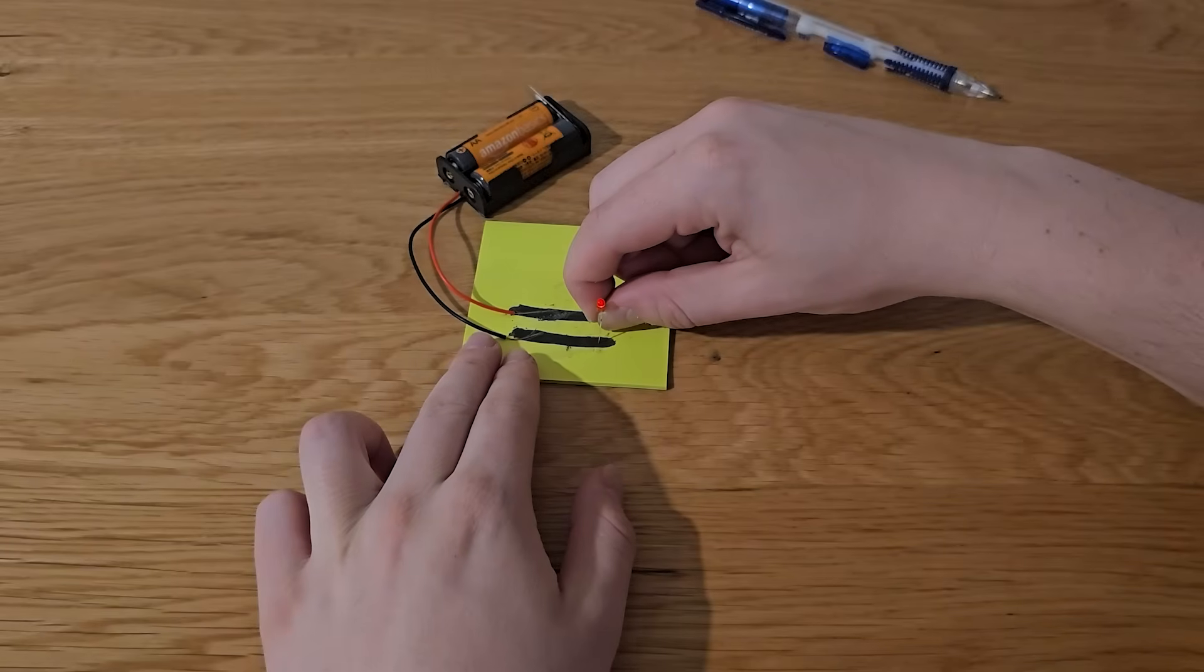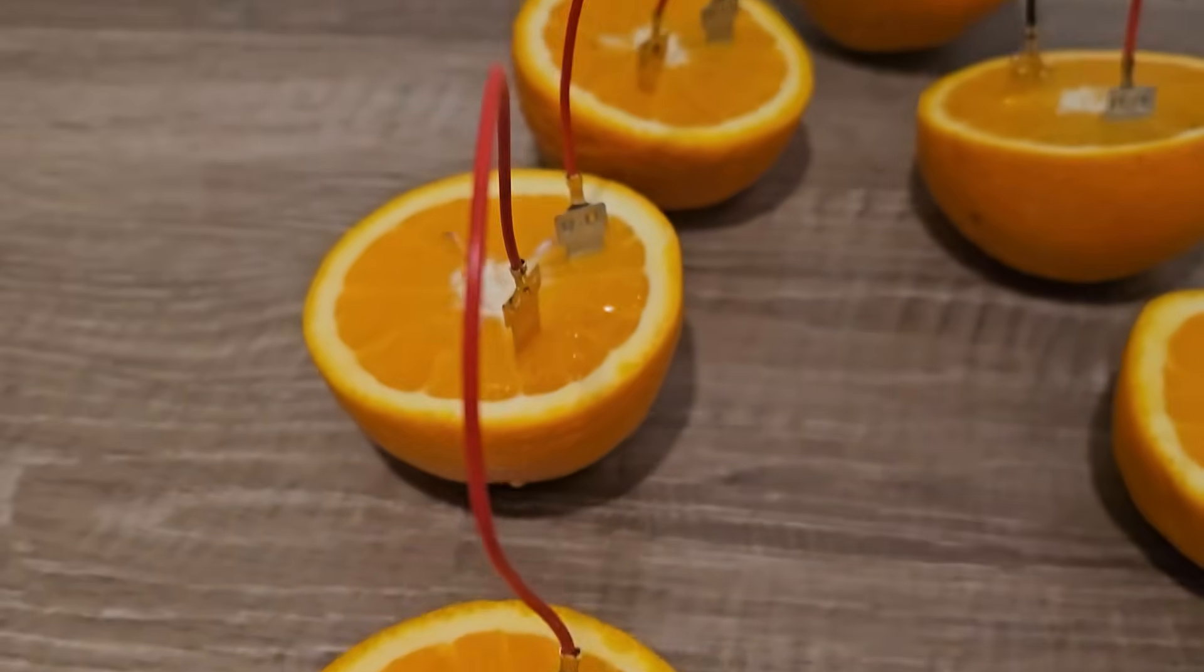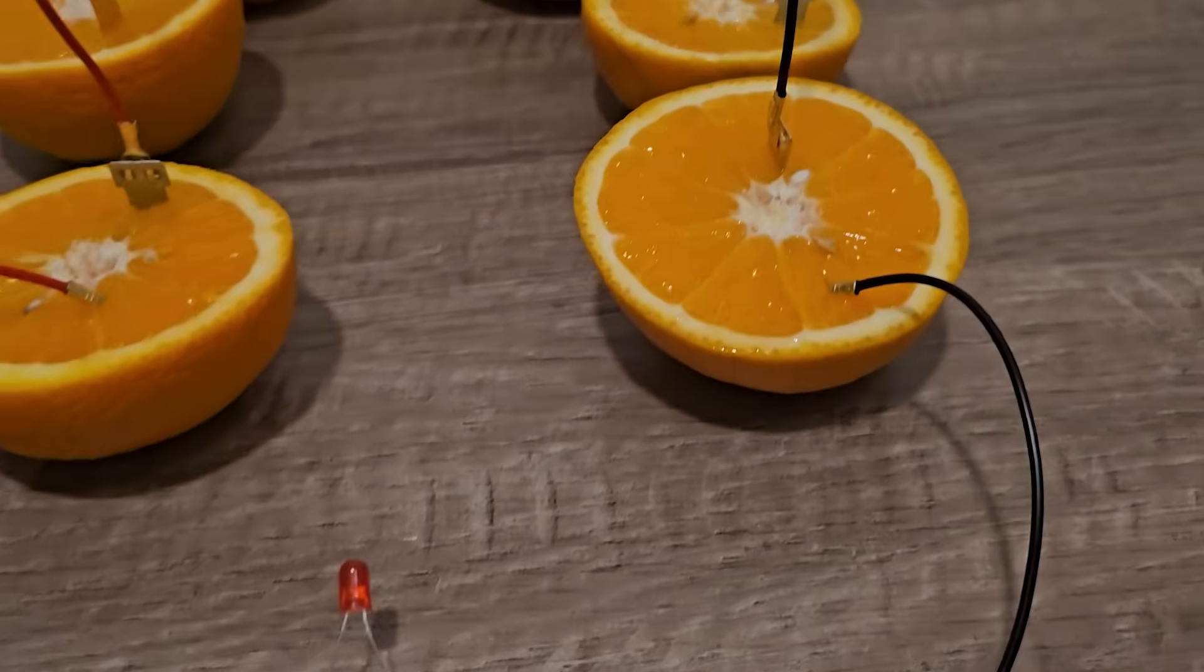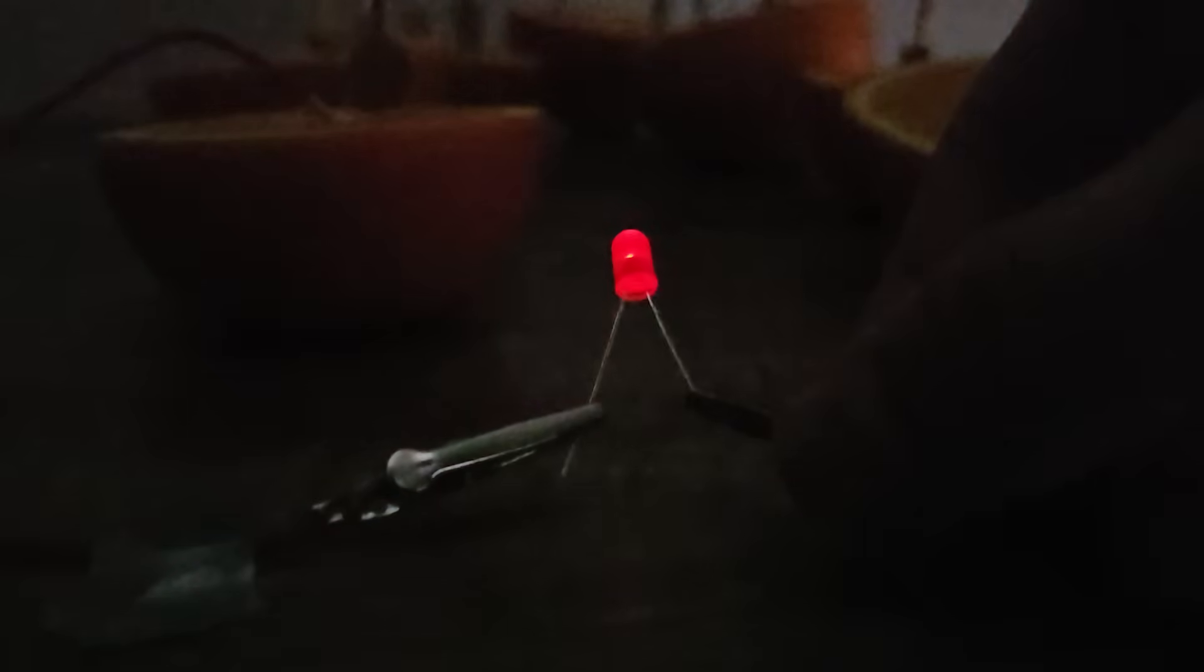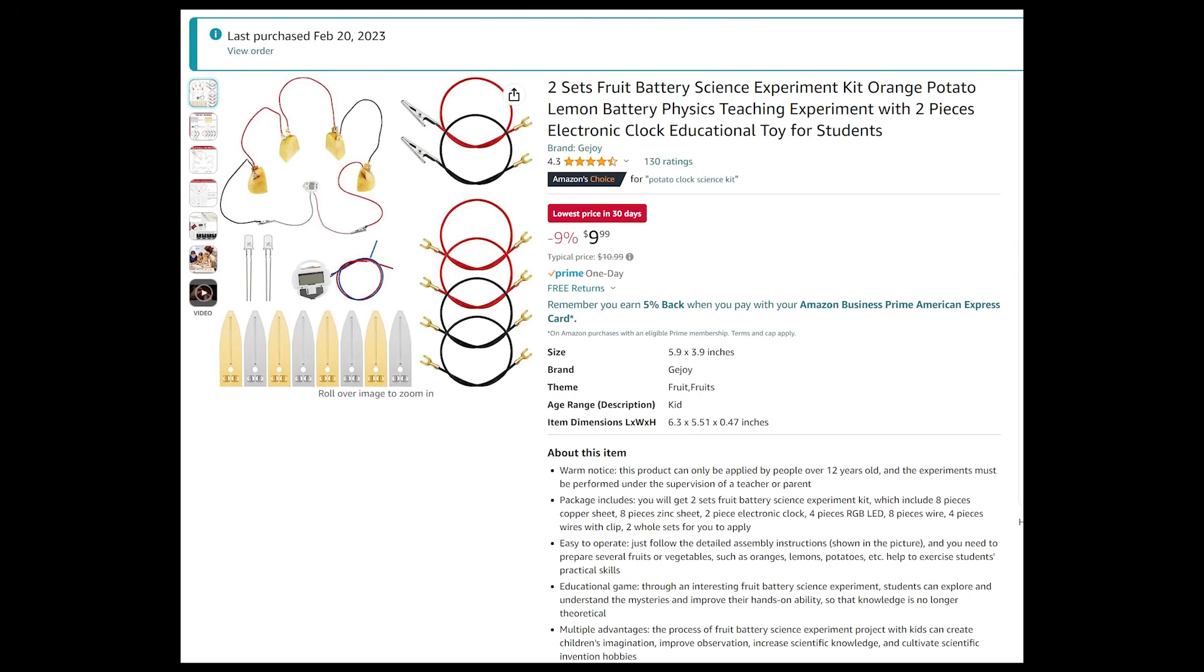Graphite does conduct electricity so this is a real way to light up an LED. Oranges in this configuration can also be used to light up an LED although it wasn't very bright which is why I needed to turn off the lights. If you want to try this at home I've linked the kit I got in the description of this video.